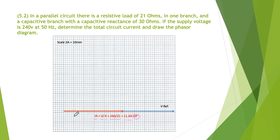The current in the resistor is the voltage divided by the resistance. So I get 240 divided by 21 giving me 11.4 amps at 0 degrees because it is in phase with the voltage.